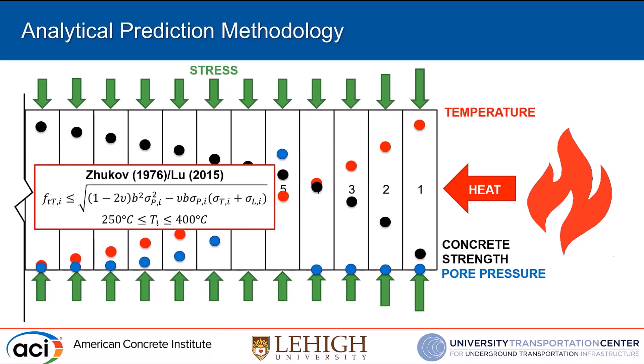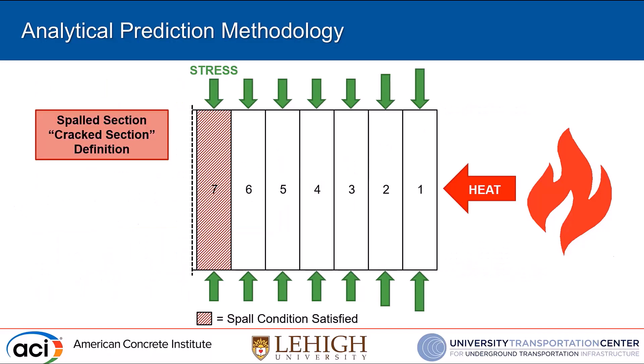Each fiber has its own independent temperature, concrete strength, and pore pressure. We evaluate each fiber for its tensile capacity using the Zhukov-Lu equation. Zhukov used a one-degree energy analysis to develop his equation, and Lu refined the coefficients for his PhD dissertation. In effect it compares pore pressure plus mechanical stress — the combination of thermal and loading stresses — against the temperature-reduced tensile capacity. Let's say we get a spall condition at fiber five or seven: everything from the heated face out to and including that condition-satisfying fiber is defined as the cracked or spalled section.